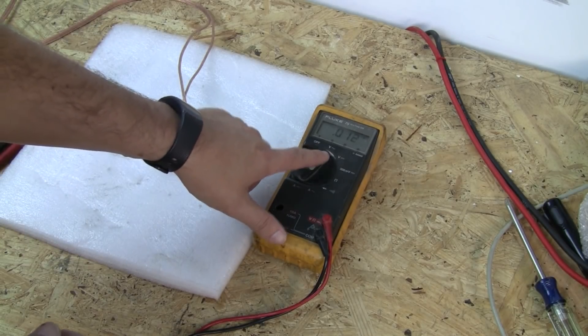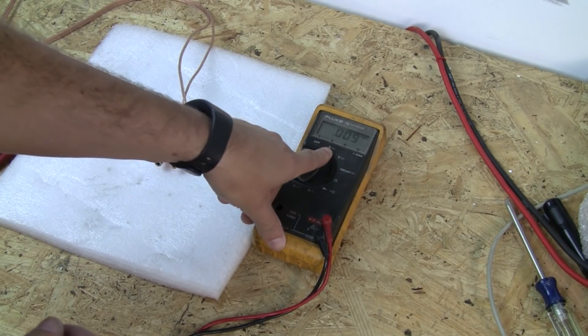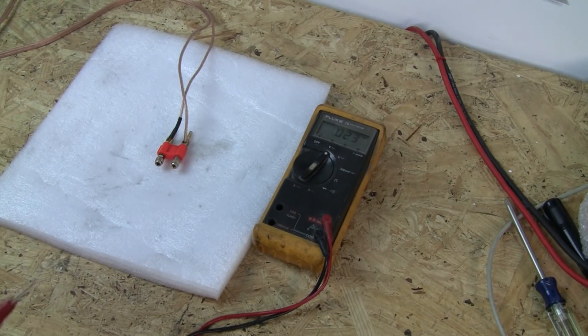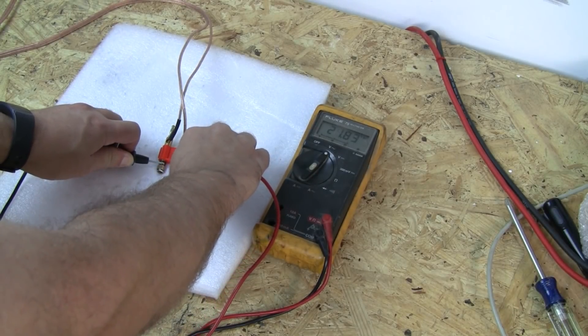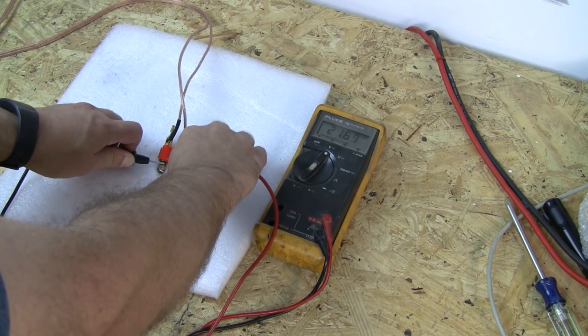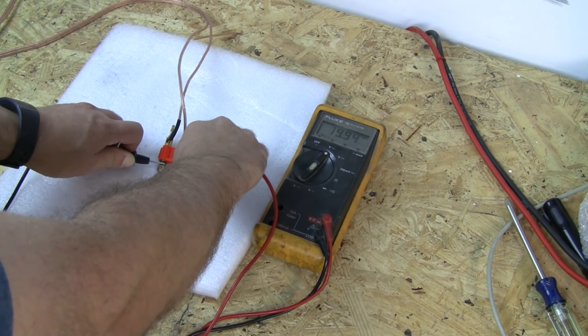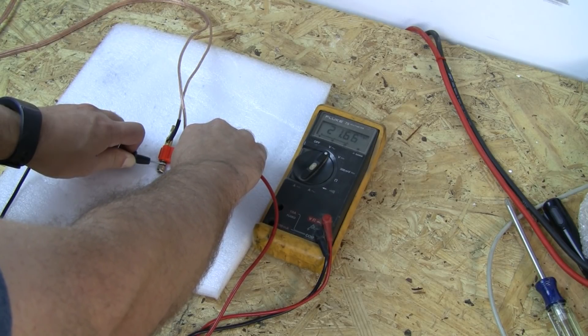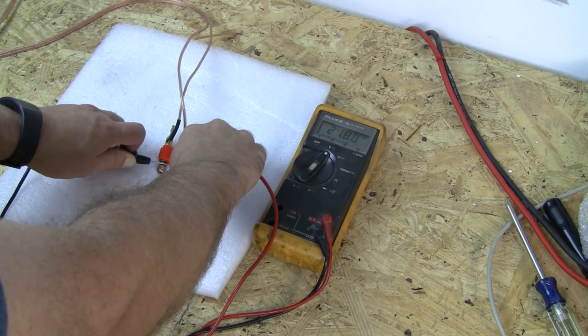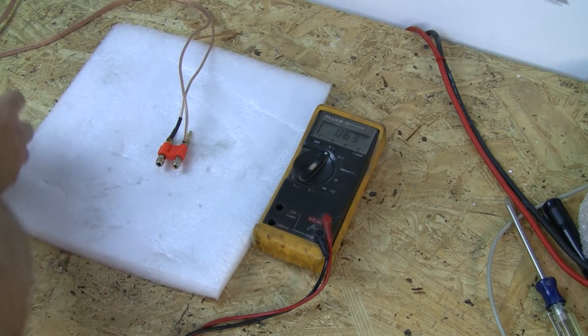We want to set to AC voltage, which is the single squiggle line there with the voltage. And we're going to start with the Fluke again. We're getting 21.7, 21.68. So this track has a little bit of variation in it, but about 21.7, 21.6.